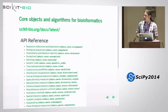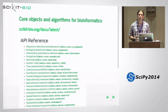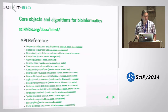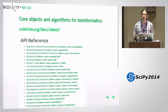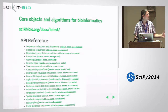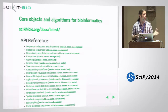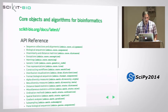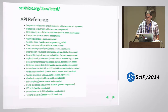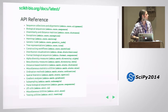So what is it that we're actually implementing here? Core objects and algorithms for bioinformatics. This includes basic objects like DNA sequence objects, RNA sequence objects — you can do things like translate them into proteins, load them into sequence collections, align them, and generate alignment objects. You can build phylogenetic trees using things like neighbor joining. This is just a short list of some of the functionality from the API reference on our website.